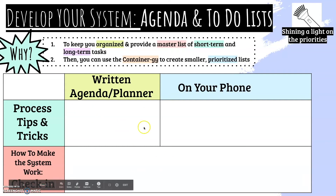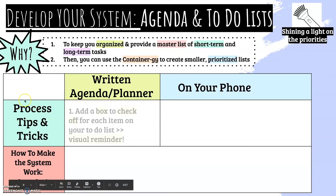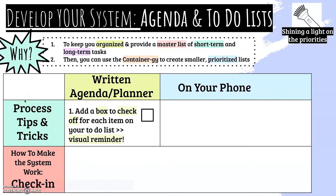When it comes to a written agenda or planner, the biggest tip I can give is add a box next to each item you want to accomplish in the day. That's a visual reminder — I haven't done this, I need to do this. Once I do it, I can then check it off, plus it's pretty fun to check it off.